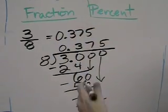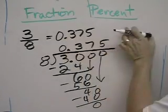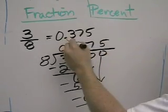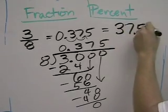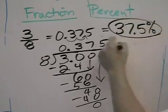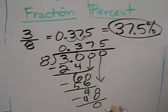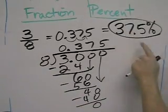We've learned earlier to turn a decimal into a percent, you move the decimal over two places, so the percent is 37.5%. So 3 eighths is the same thing as 37.5%.